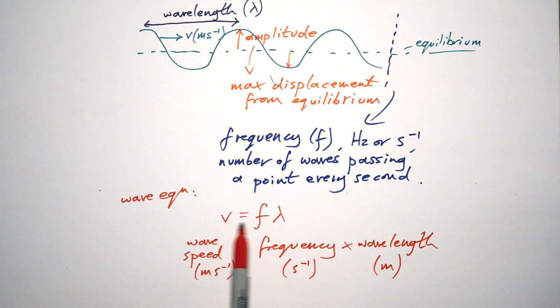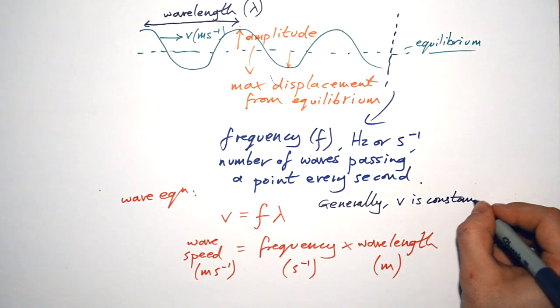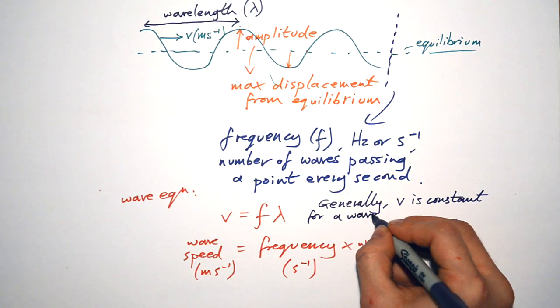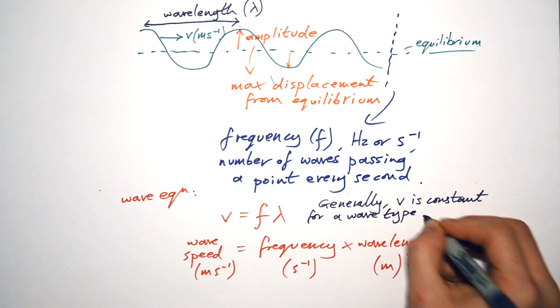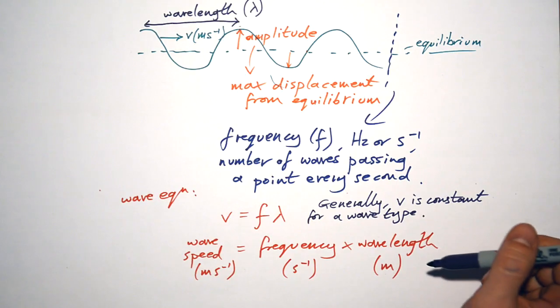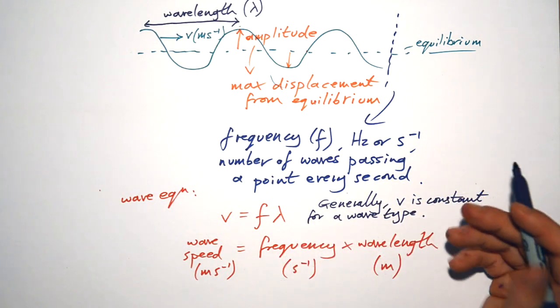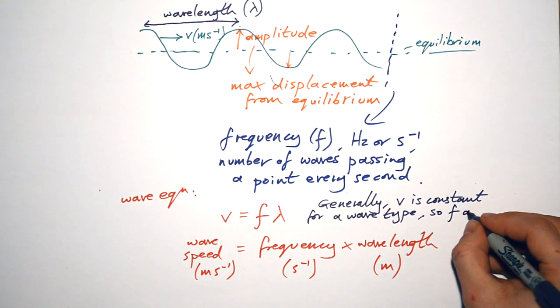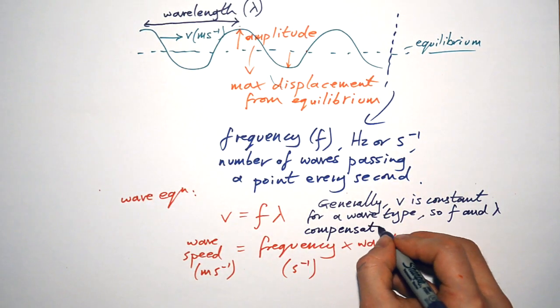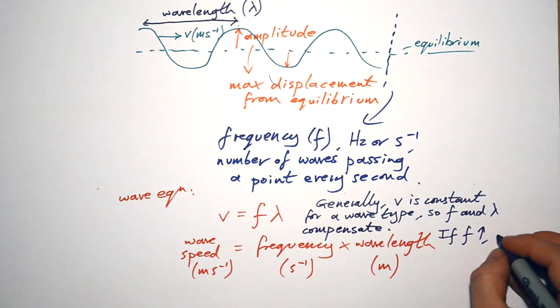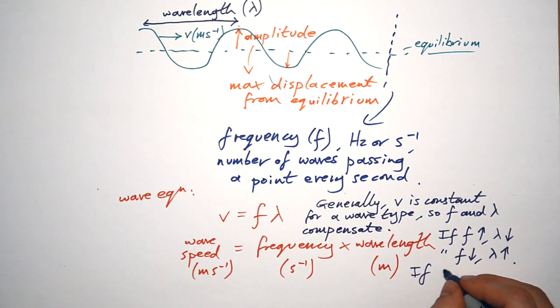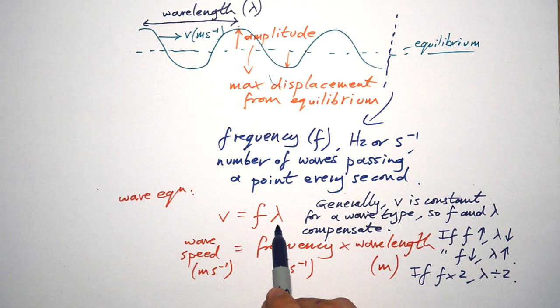Wave speed measured in meters per second. Frequency measured in hertz or seconds to the minus one. Wavelength is meters, so the units work out meters per second. And so that gives us wave speed. To rearrange that, if you're GCSE, you can get away with putting that into a triangle. V on top, f and lambda on the bottom. But if you're A level, you should be pretty au fait with rearranging this on the fly. So just one small thing. Generally, v is constant for a wave, or for a type of wave. So for EM waves, the speed is 3 times 10 to the 8 meters per second, 300,000 meters per second. That never changes for the speed of light unless it goes into another medium. So that means that f and lambda compensate for each other. So if f goes up, in order for the speed to stay the same, lambda has to go down. And vice versa. So that means if f doubles, what has to happen to lambda? It has to half.